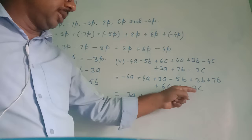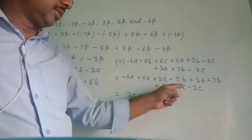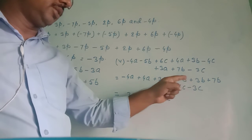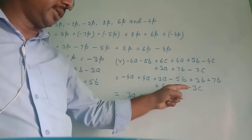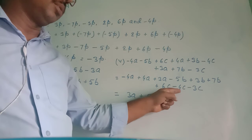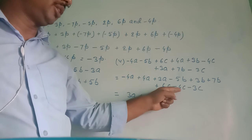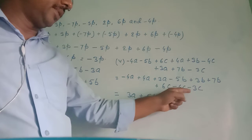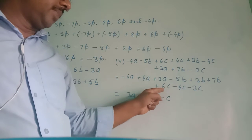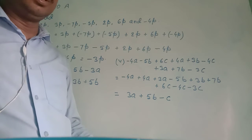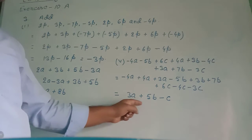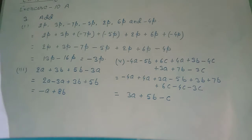For the c terms: 6c, and minus 4c minus 3c — minus minus is plus, so we add 4c plus 3c equals 7c, but the sign of the greater term (4c with minus) makes it minus 7c. So plus 6c minus 7c equals minus c. The addition became 3a plus 5b minus c.